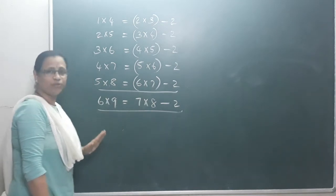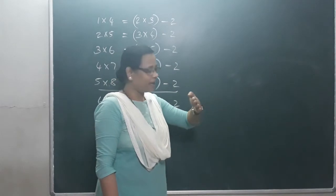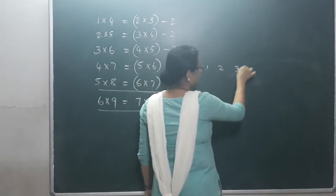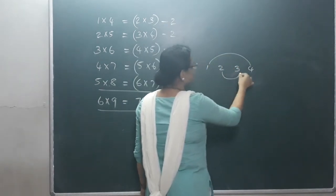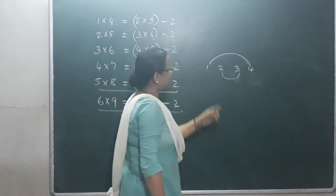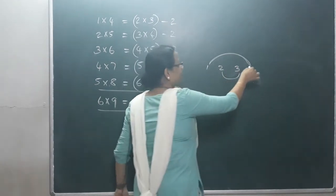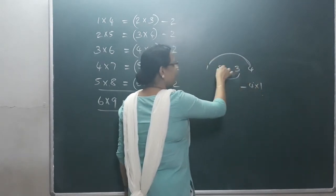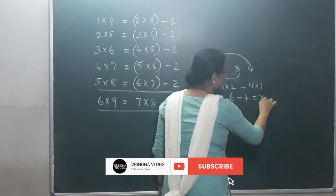We have two lines. Next question: 4 consecutive natural numbers. What is this difference? We multiply the 2 extremes: 4 into 1 is 4. The middle 2 times 6 minus 4 is equal to 2.